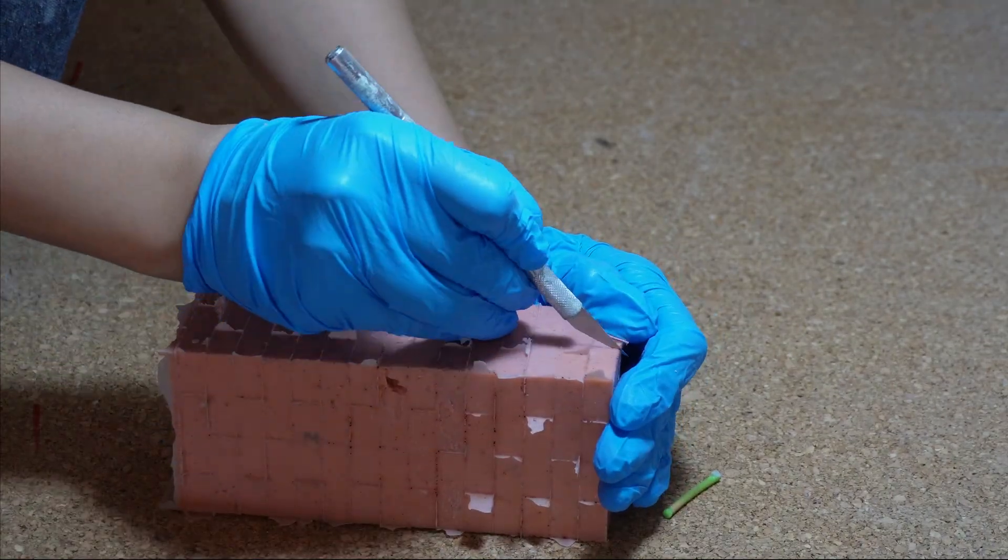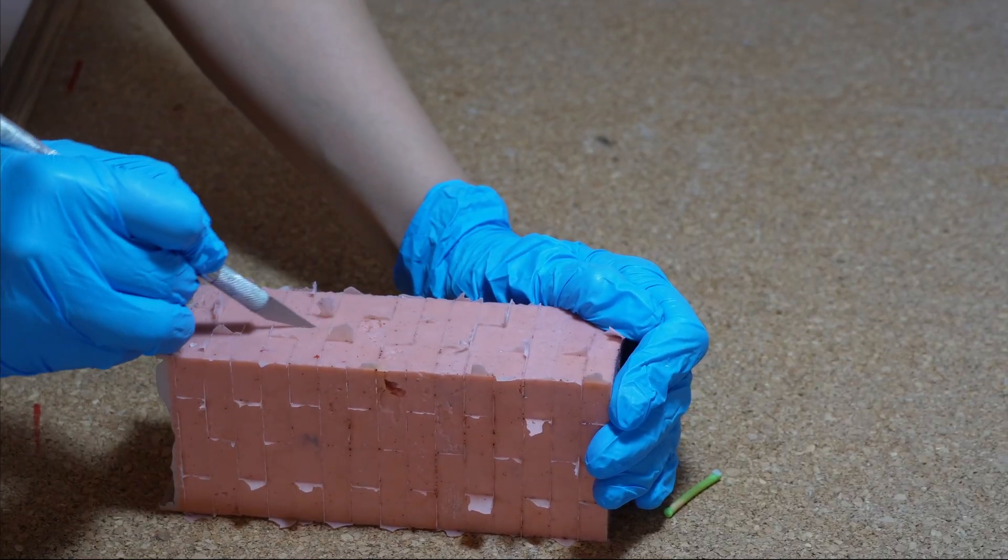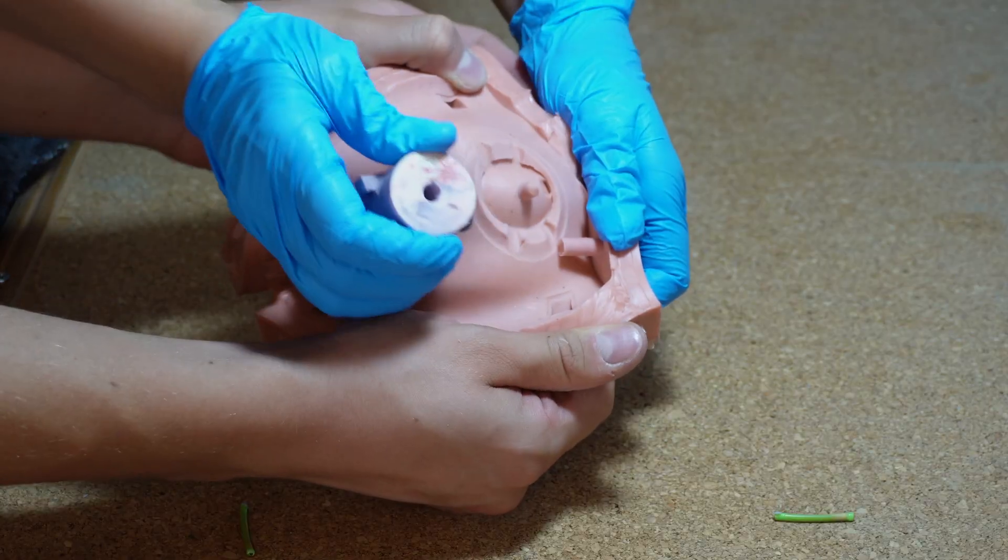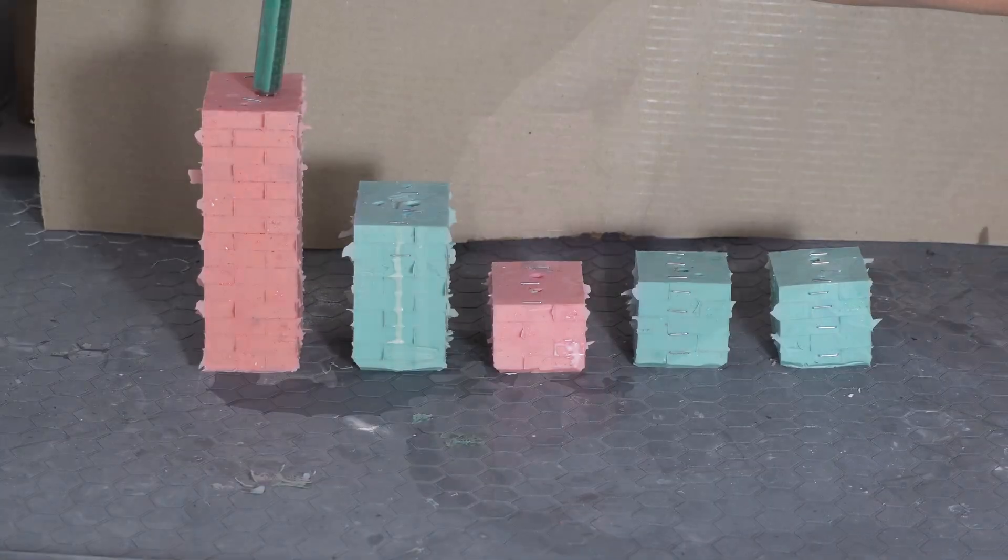We embed the master into silicone using a cut mold approach, burying the part entirely, and later slicing the mold open to retrieve it. Once the silicone cures, we cut the mold open, retrieve the master, and begin injecting polyurethane with the Flow system.